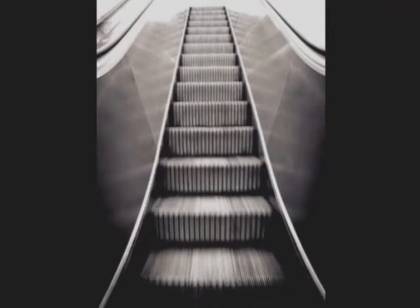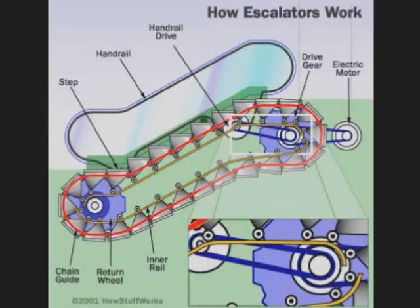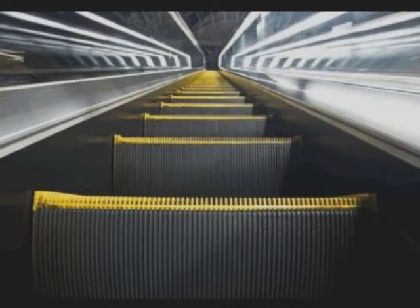Modern escalators have single-piece aluminium or steel steps that move on a system of tracks in a continuous loop. Tracks and the truss are combined together in an escalator system. The track is built into the truss to guide the step chain, which continuously pulls the steps from the bottom platform and back to the top in an endless loop. There are two tracks: one for the front wheels of the steps and one for the back wheels of the steps.